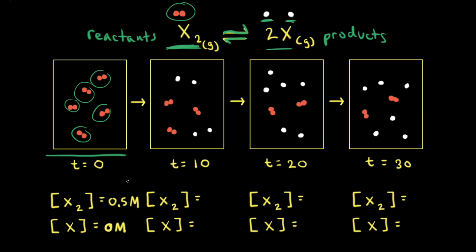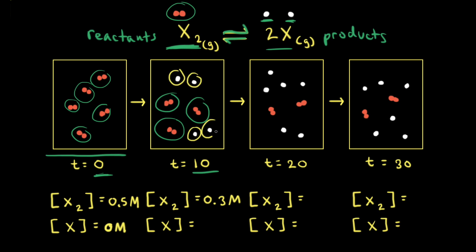Next, we wait 10 seconds. We started at time equal to 0 seconds, and now we're at time equal to 10 seconds. Now we can see there are three particles of X2, so that would be 0.3 molar. And now we have some particles of X — one, two, three, four particles. If each particle represents 0.1 moles, that's 0.4 moles of X divided by one, or 0.4 molar.